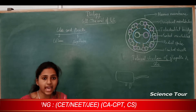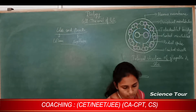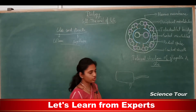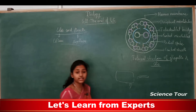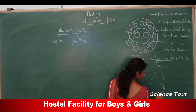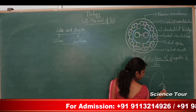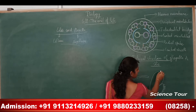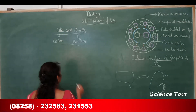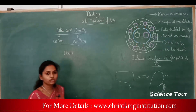Cilia are very small hair-like outgrowths on the surface of the cell membrane, especially present in Paramecium. All around the body of a Paramecium, you can see small hair-like structures — these are the cilia. They work like oars, which are special structures used to move a boat.